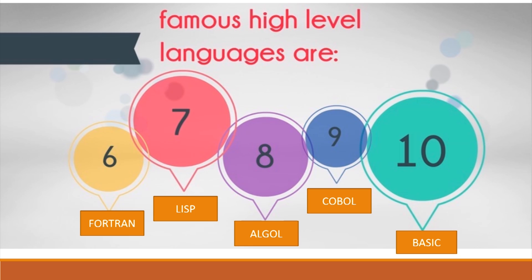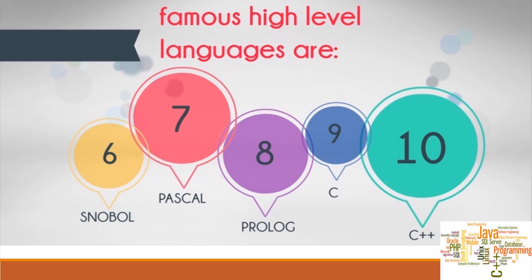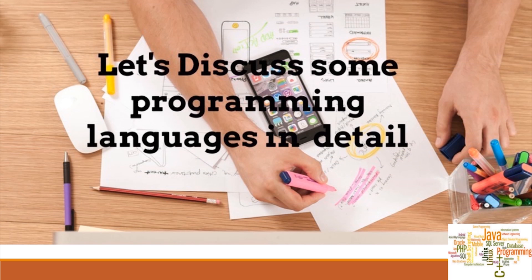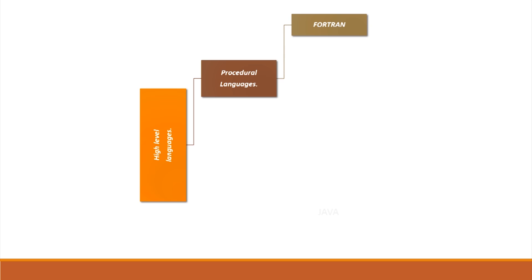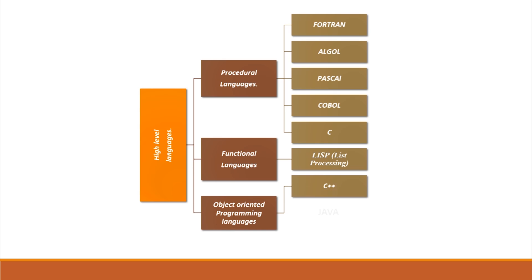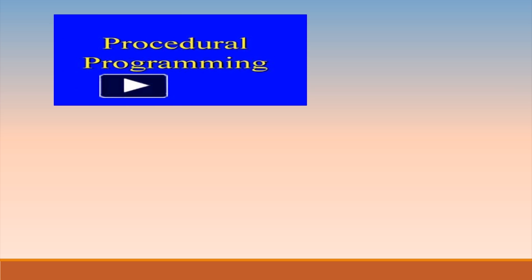There are many high-level languages, but the commonly used ones are well-known. Generally, high-level languages are classified into three categories: Procedural programming languages such as Fortran, Algol, Pascal, COBOL, and C; Functional programming languages such as Lisp; and Object-oriented programming languages such as C++, Java, and Python. The most famous and early imperative high-level languages are Fortran, COBOL, and Algol 60.